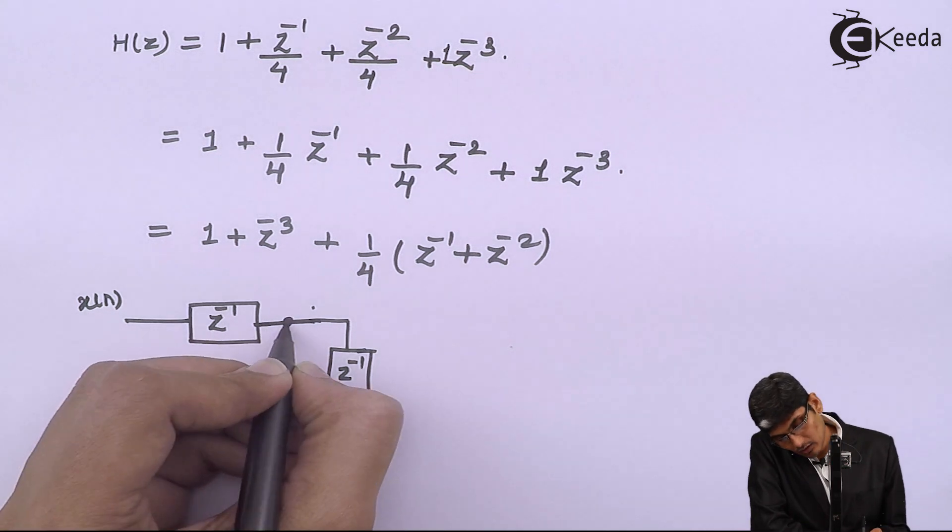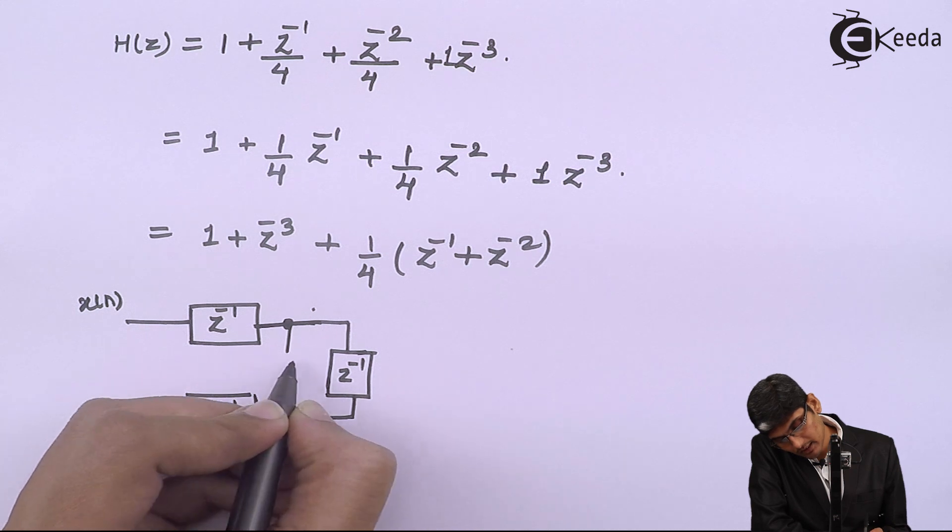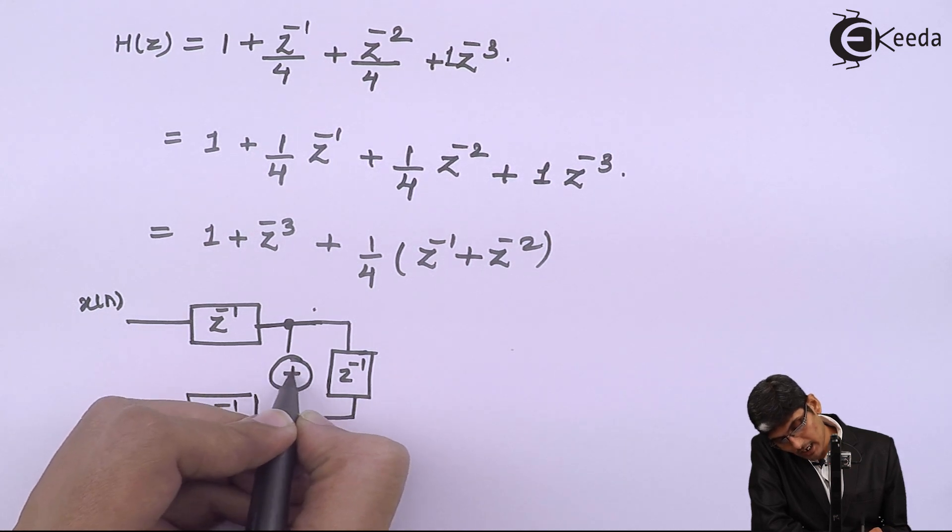Because we want that X of 1 and X of Z inverse 1 and Z inverse 2 to be added together.